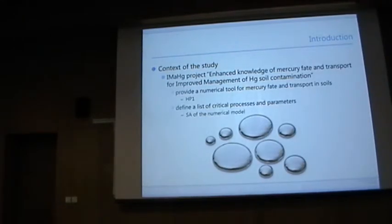The work was done within a small project called IMAGE, which stands for Enhanced Knowledge of Mercury Fate and Transport for Improved Management of Mercury Soil Contamination. The work of our group was to provide a numerical tool for mercury fate and transport in soil. And after a lot of thinking we decided to use HP1 for that. It's a small project so we didn't have any time to validate our model with experimental results. But one of the important things when you are doing a model is to analyze which parameters and which processes are important. So we did a sensitivity analysis of this numerical model.